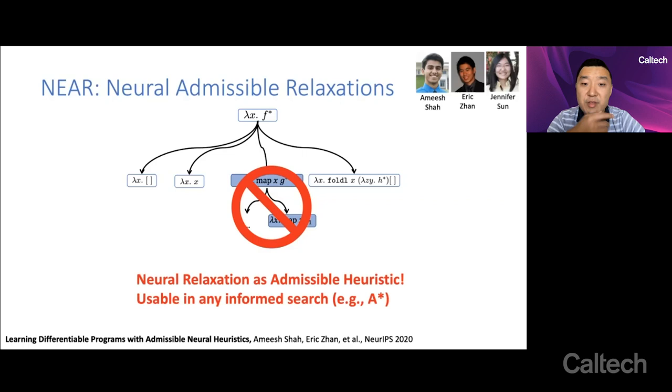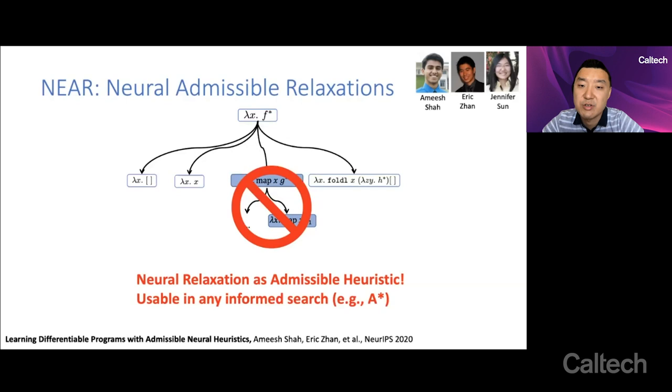And this is the neural admissible relaxations idea. And you can incorporate this, then you can interpret this exactly as an admissible heuristic. You can incorporate it to any informed search algorithm, such as A-star search, and you inherit all the convergence guarantees of A-star search.